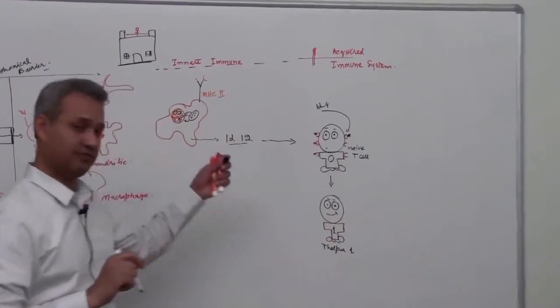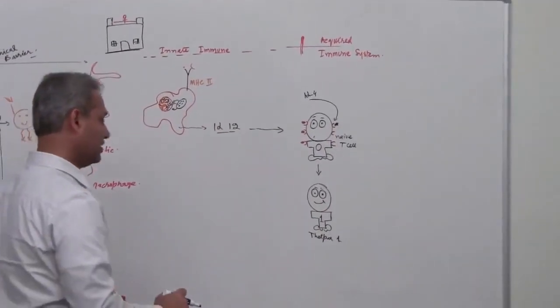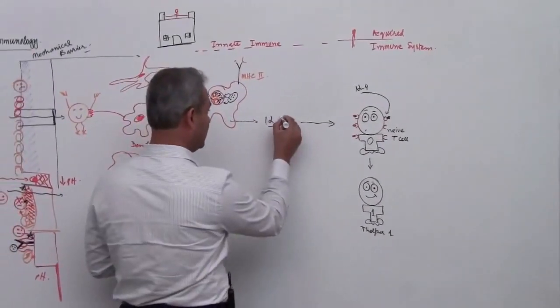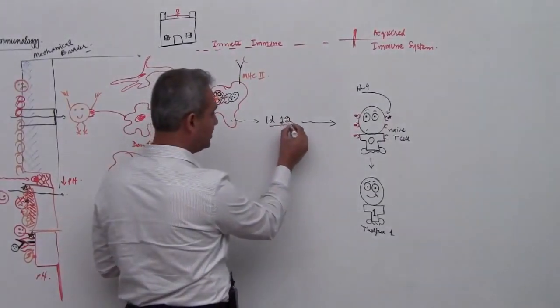So T helper 1, if you see he is like a little bit more aware of his surroundings I guess. So he knows what his function is. So you can remember it by this. Look, IL-12 has 1 in it and 2.